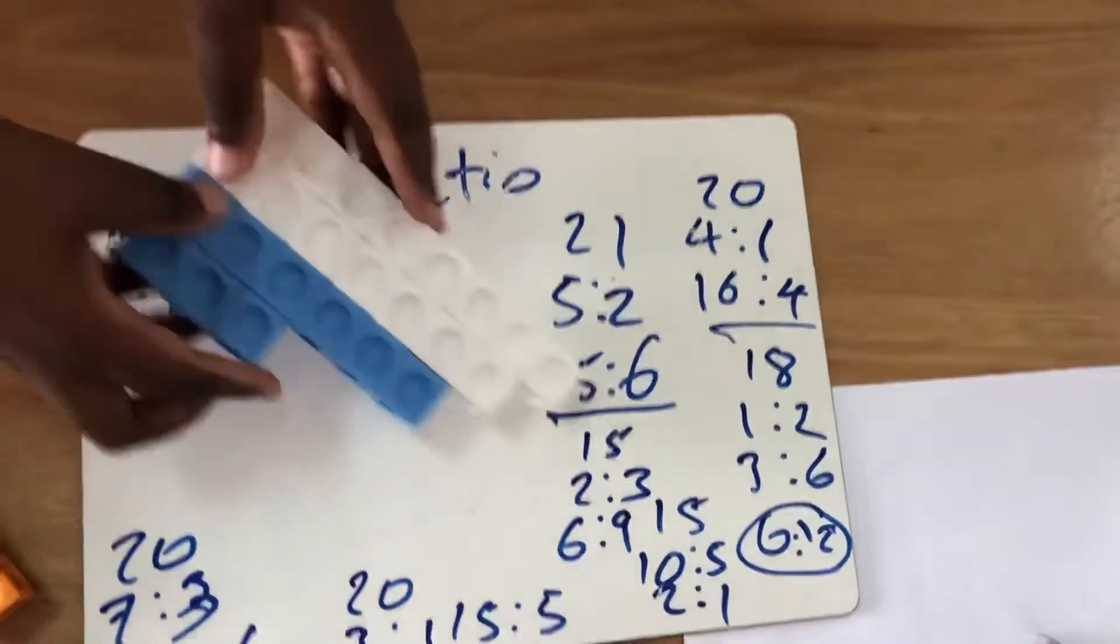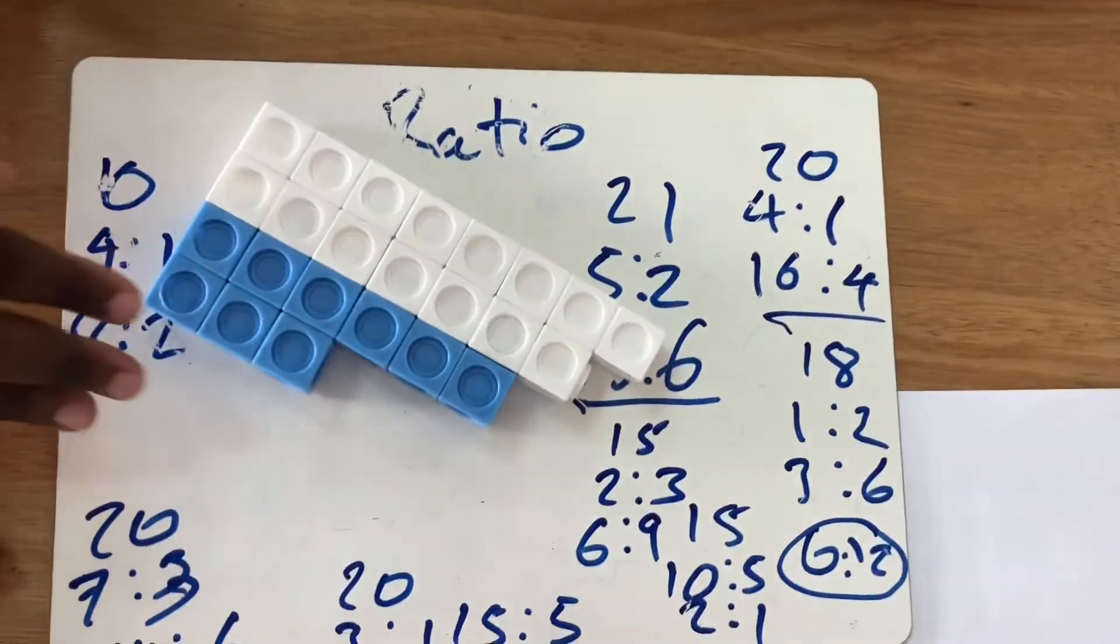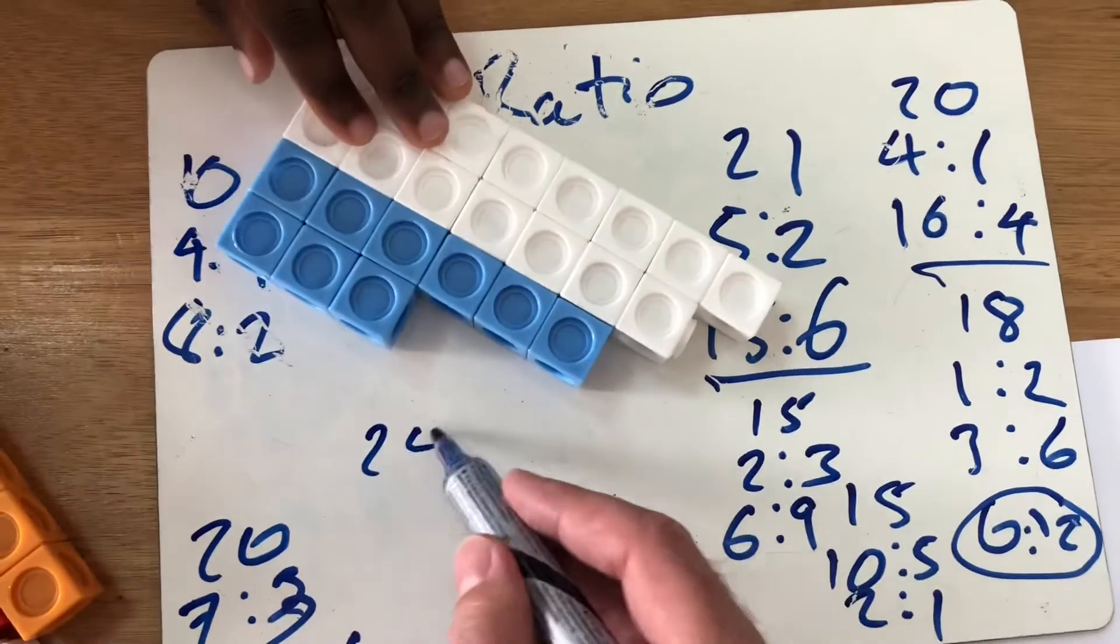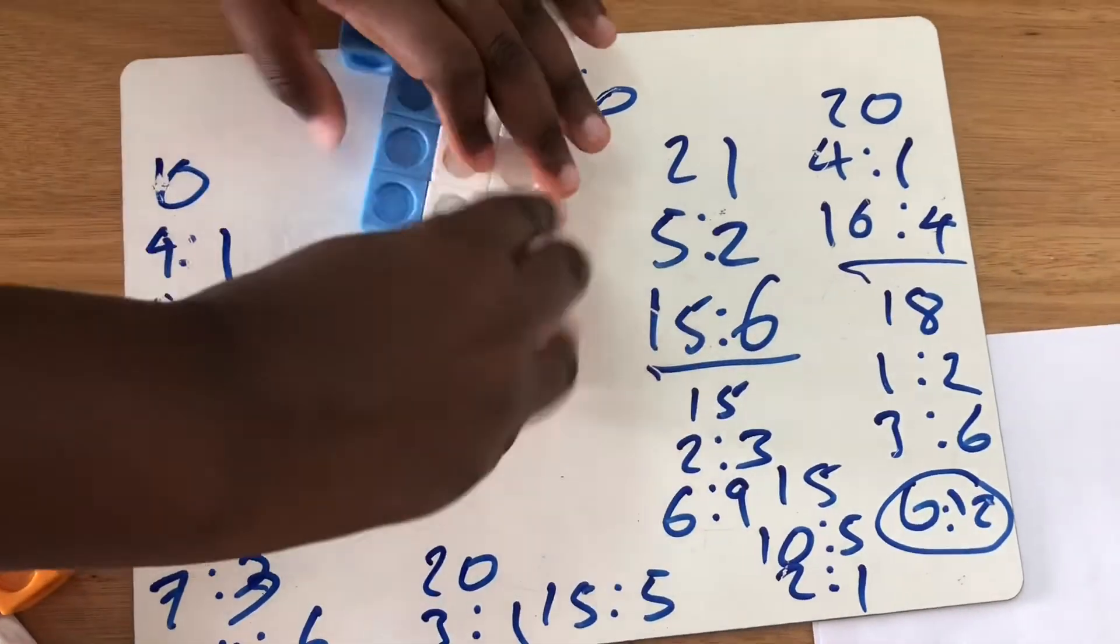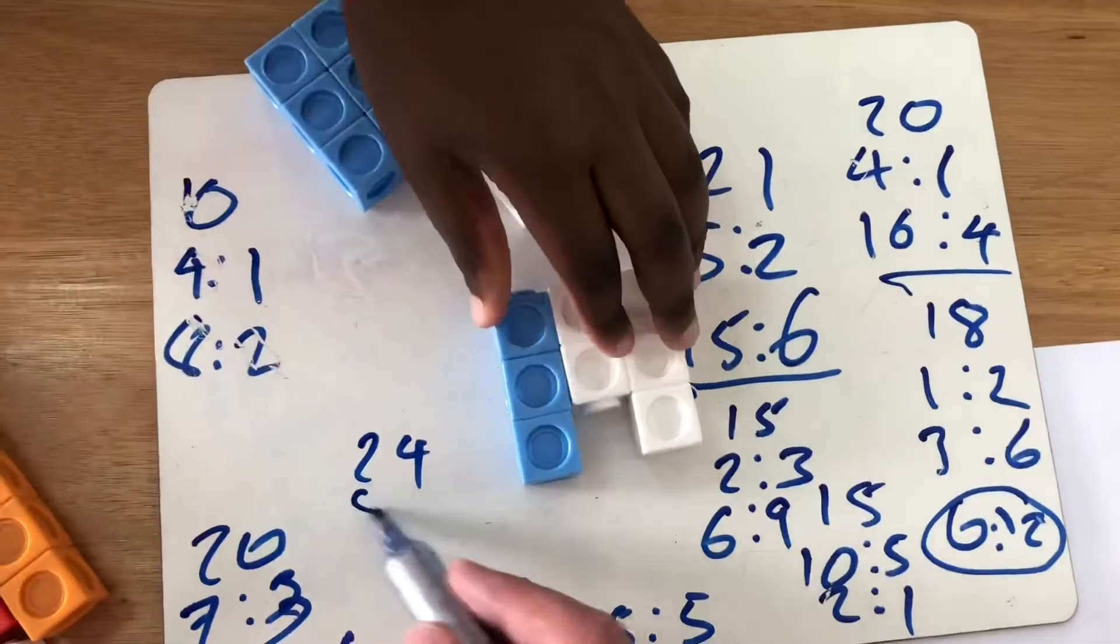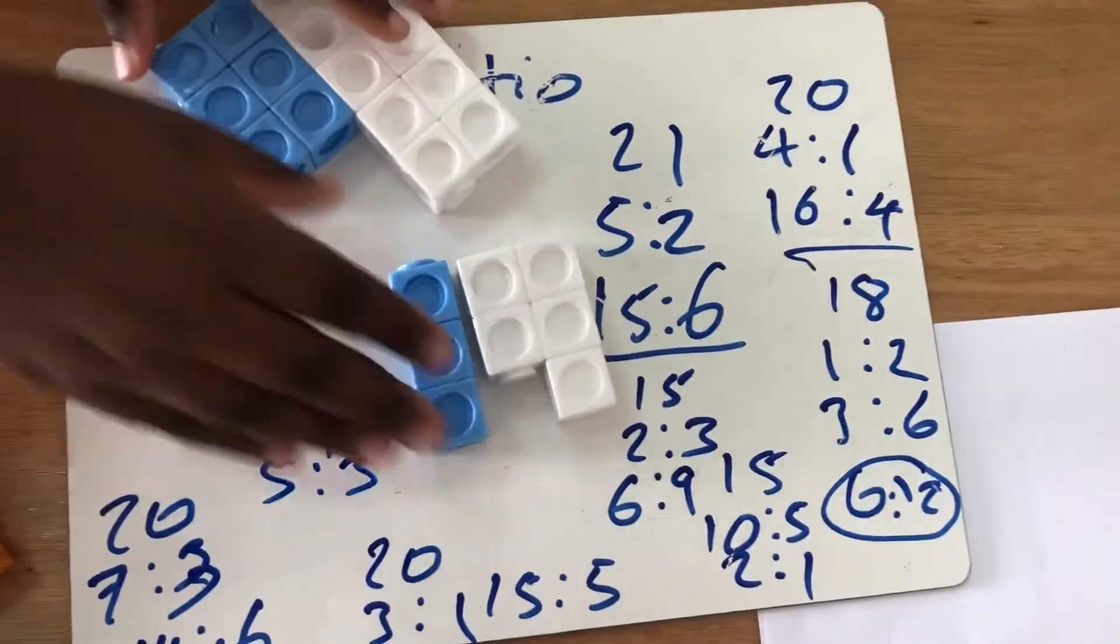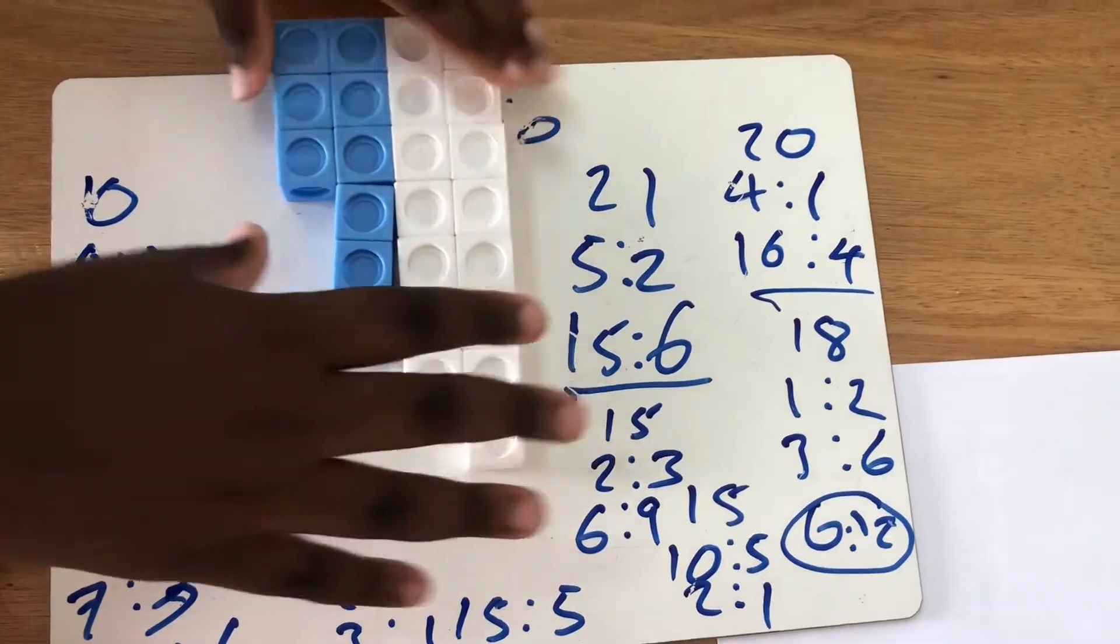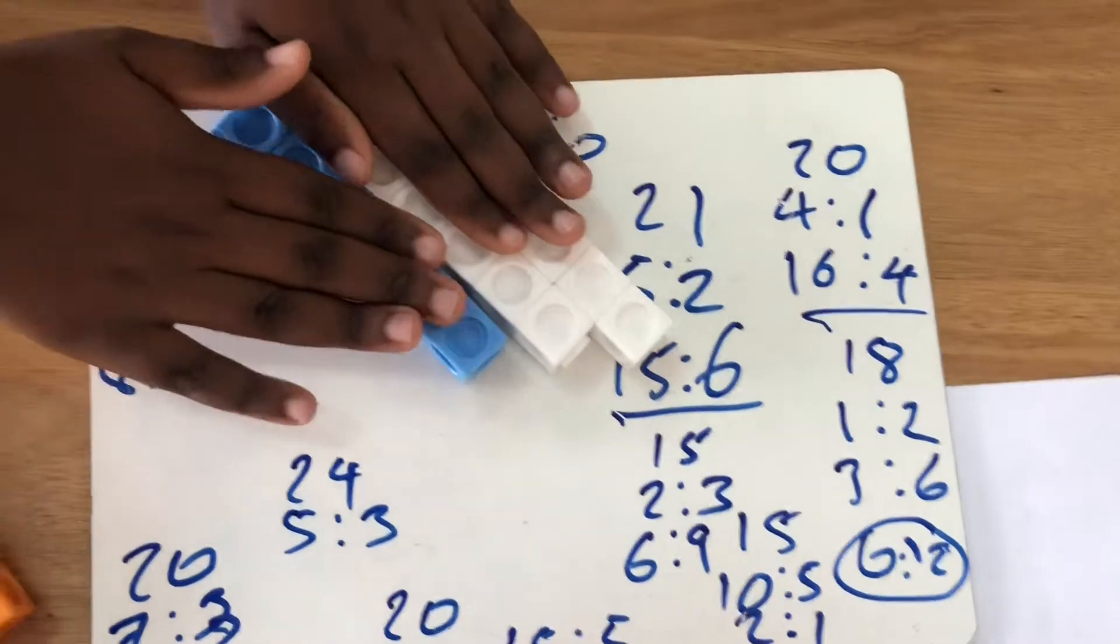A couple more. So here I have a graph and this has 24 blocks in total. So these 24 blocks in total can be split up in the ratio of 5 to 3. Breaking that up 5 to 3. But if we split it up from the actual 24, it would actually be 15 to 9.